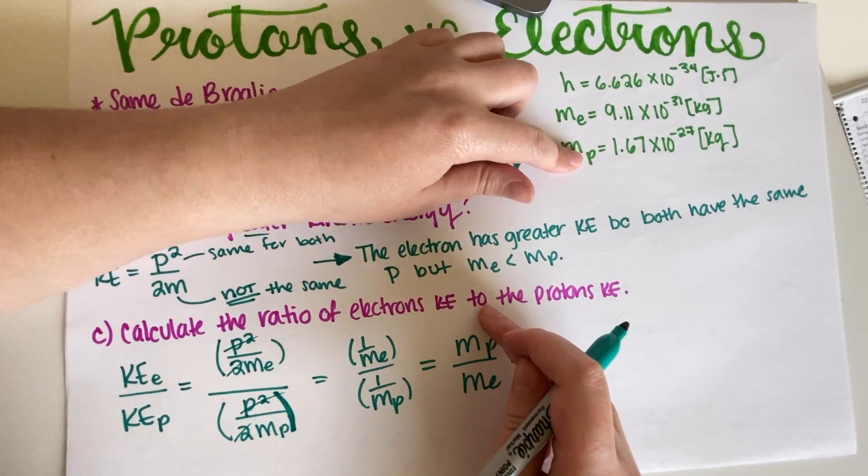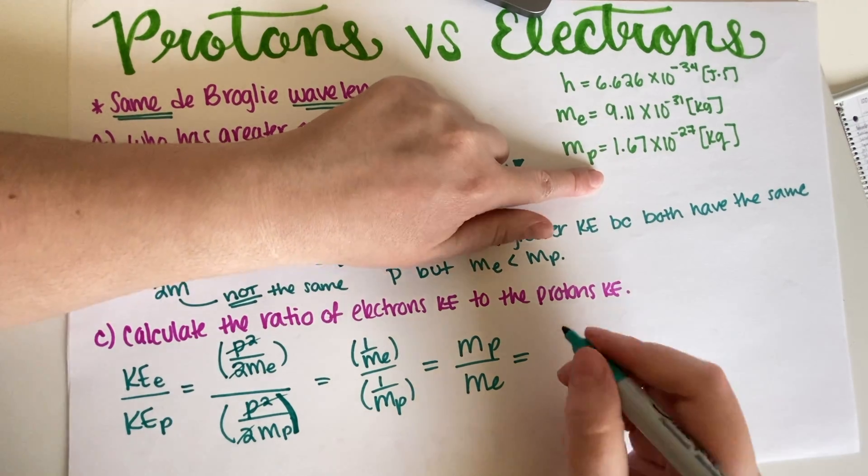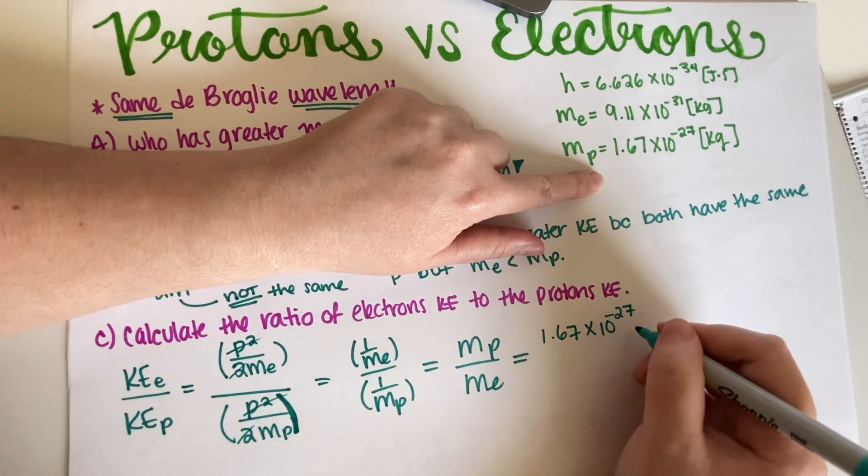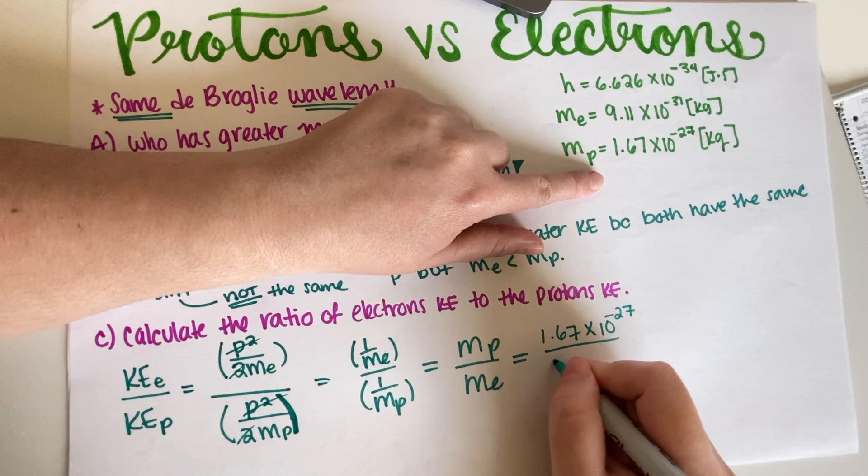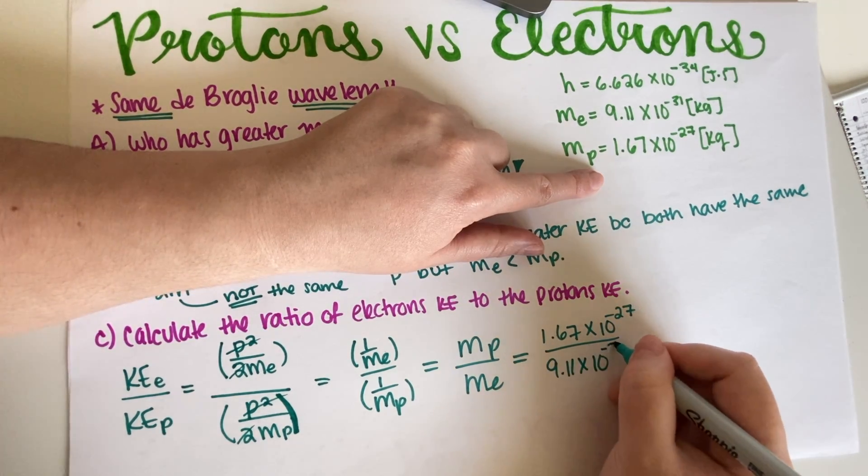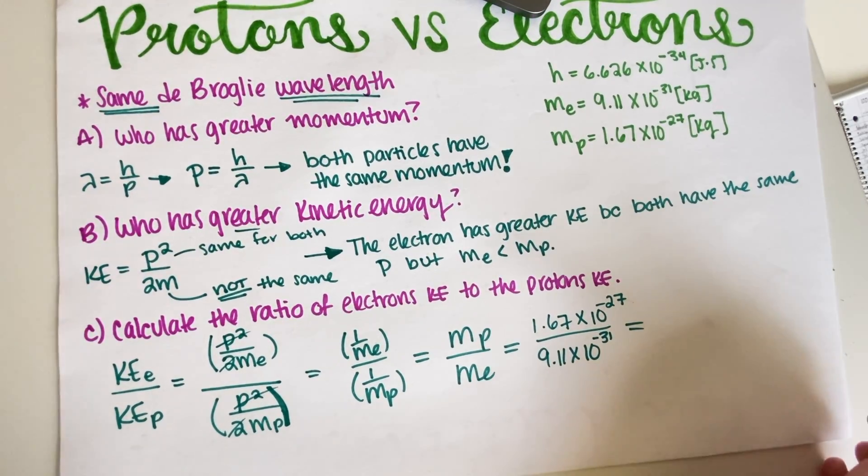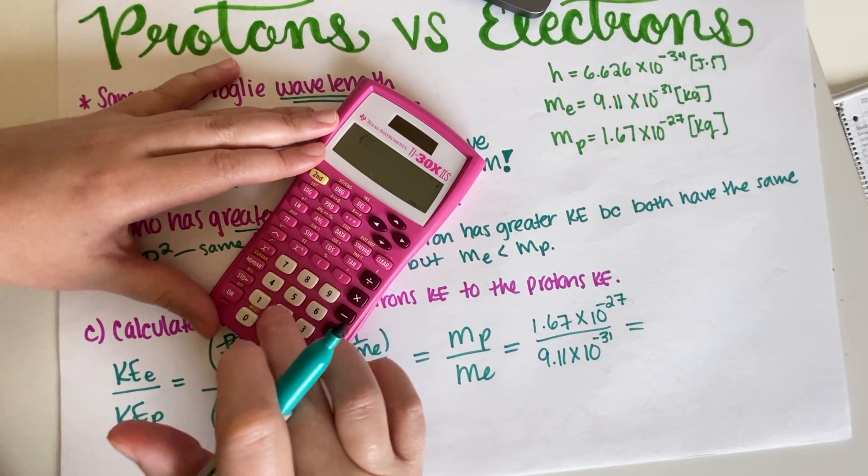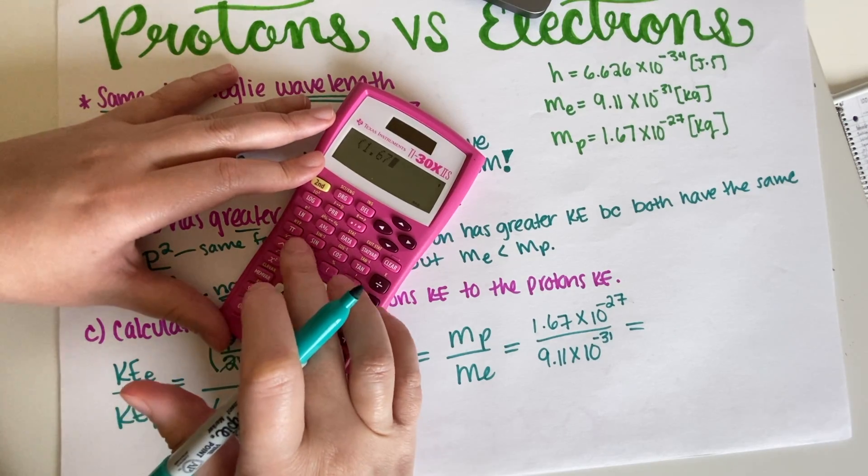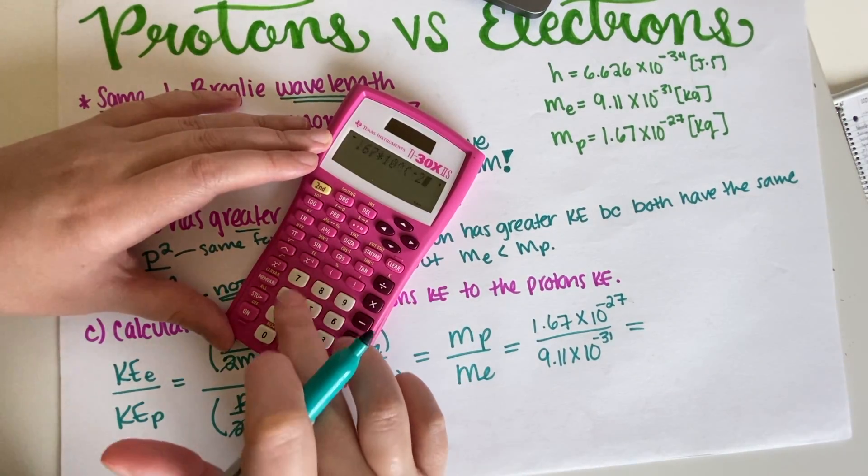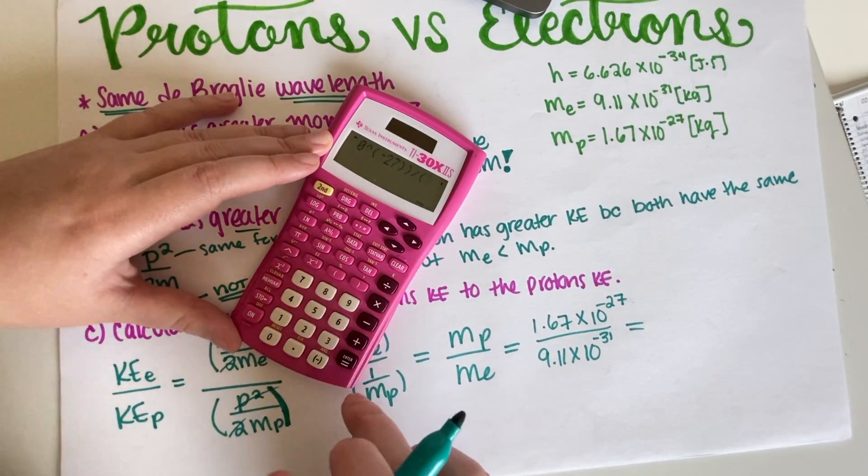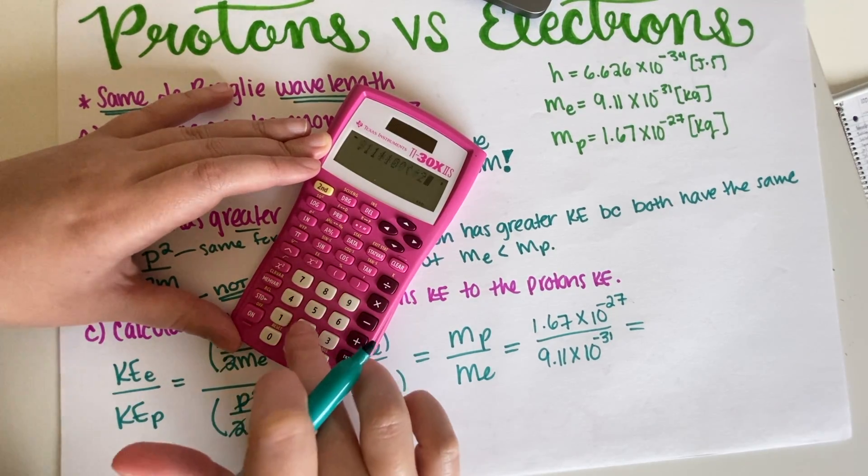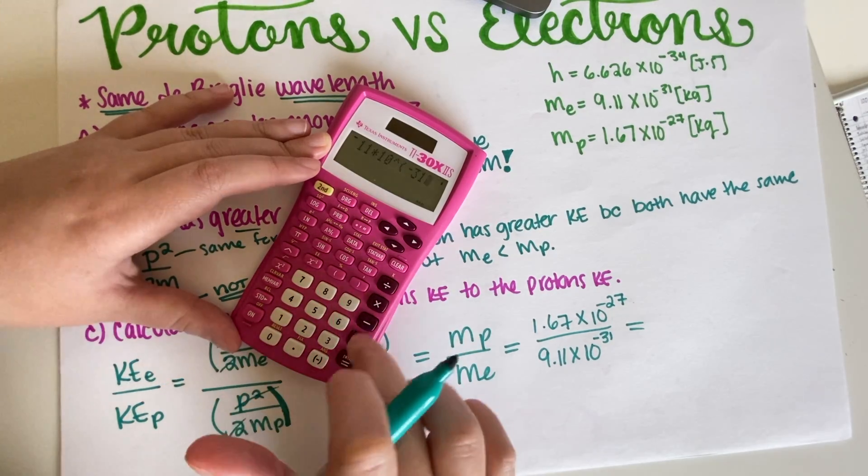So they got flipped because it's one over divided by one over. So this is 1.67 times 10 to the negative 27 kilograms, which cancels out kilograms, divided by 9.11 times 10 to the negative 31. So let's just put this on a calculator: 1.67 times 10 to the negative 27 divided by 9.11 times 10 to the negative 31.